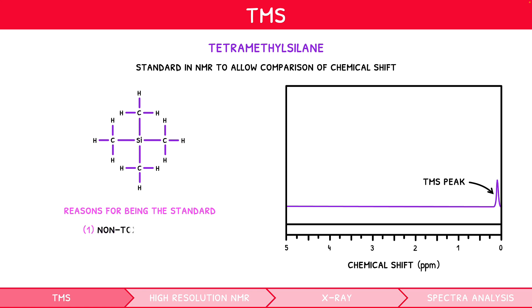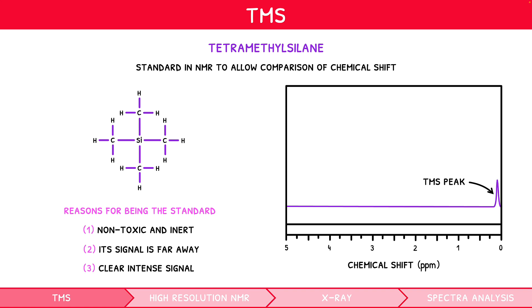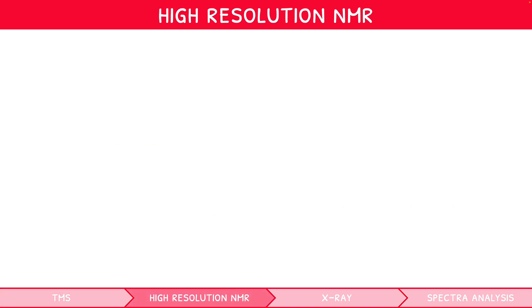TMS is used as the standard because it is non-toxic and inert, it gives a resonant signal far away from test organic compounds, and 12 protons in the same environment gives a clear, intense signal, easily identified. However, the higher-level syllabus extends beyond understanding TMS. As hinted in the final video of our IB Chemistry Topic 11 video series covering low-resolution NMR, you must interpret high-resolution spectra.